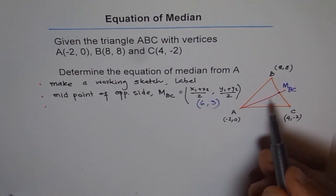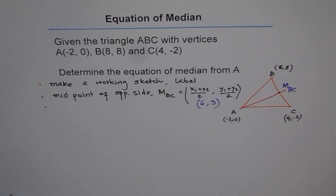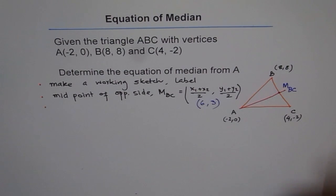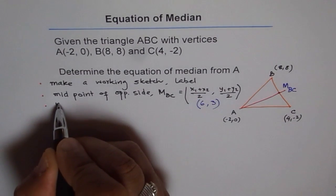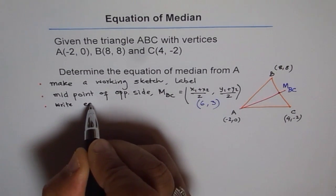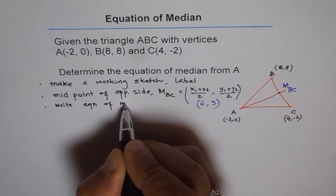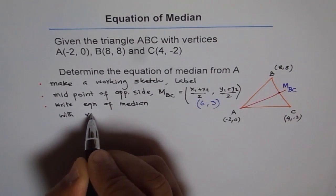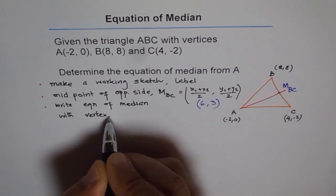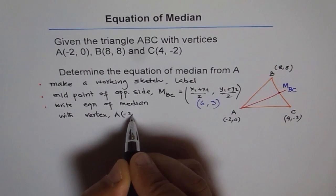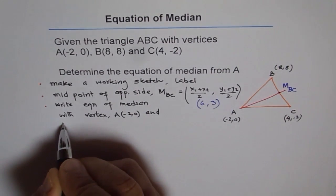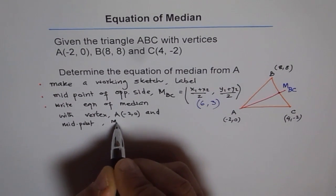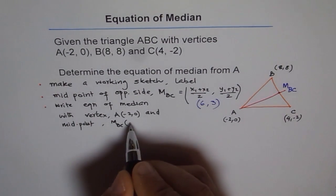Now, you know the midpoint and you know another point. So you know 2 points. So you can always write equation of a line, which is the median in this case, using the 2 points. So now, write equation of median with vertex, which in case for us is A, which is (-2, 0). And midpoint, which for us is M_BC. And the point we calculated is (6, 3), correct?